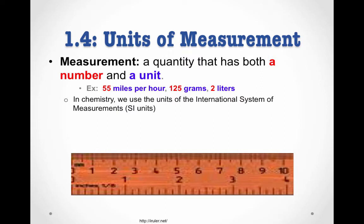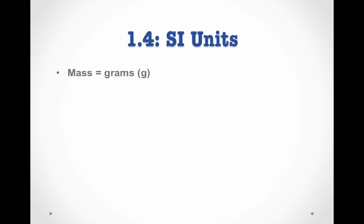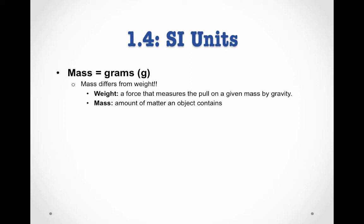In chemistry, we use the units of the International System of Measurements, or SI units. It's abbreviated SI because it stands for Systeme Internationale, which is French for International System. We'll be measuring mass in grams, which is abbreviated with a lowercase g. Just a side note about mass. Mass is different from weight, as you might remember from physics. Weight takes the force of gravity into account, whereas mass does not. Mass is just the amount of matter an object contains. So if you take the same object to Mars and Jupiter and the Moon and Earth, it will have the same mass, but it will have a different weight because the pull of gravity is different in each of those places. For our purposes, these are essentially interchangeable, but it is important to realize that technically they are not the same thing.